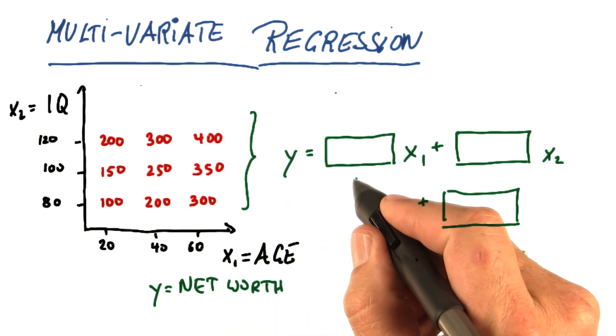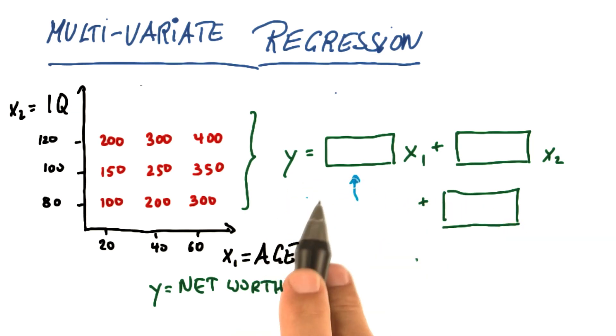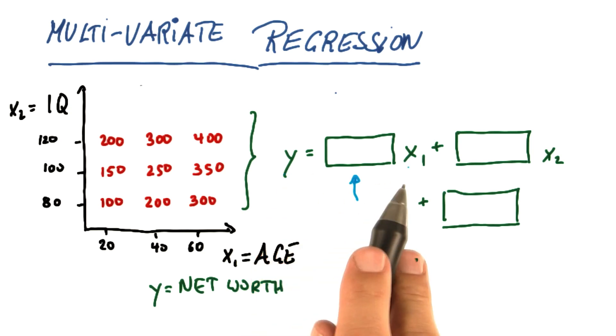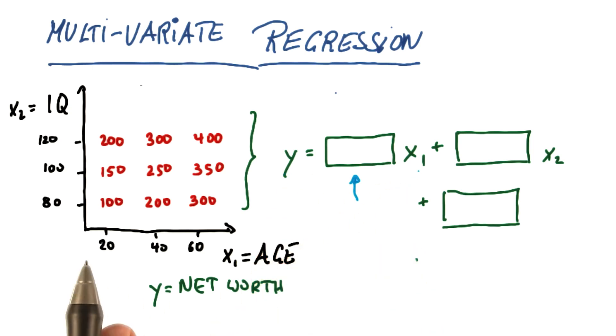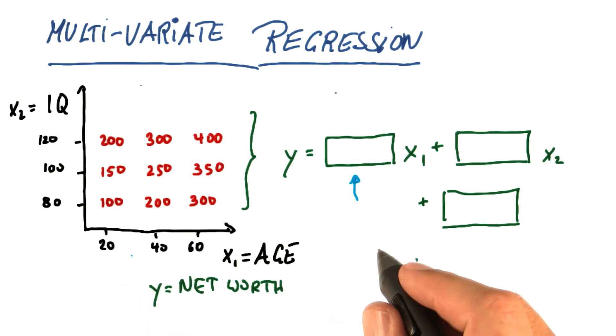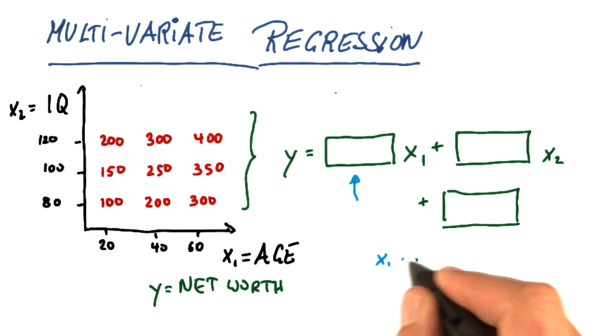I'm going to only look at the very first field over here and ask, how much does y grow as we vary x? And you can see, as we add 20 to x, from 20 to 40, or another 20 to x, every time x1 grows by 20,